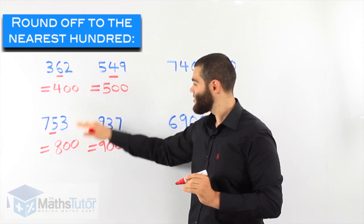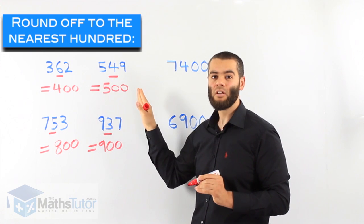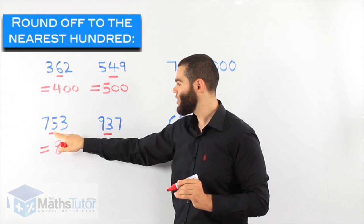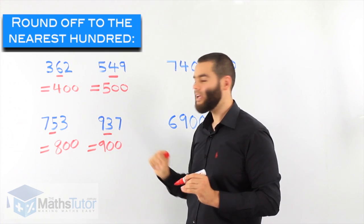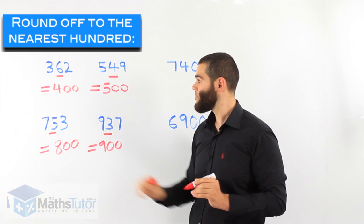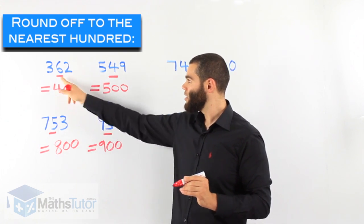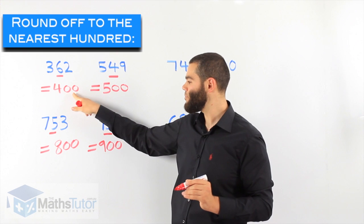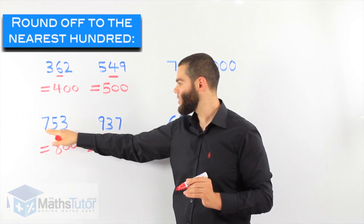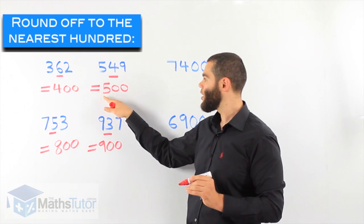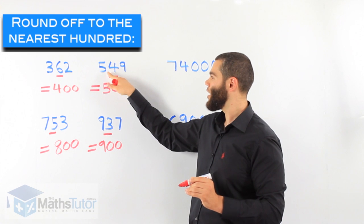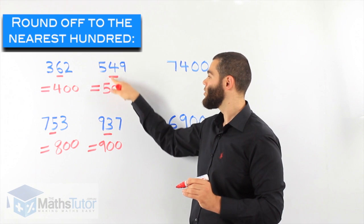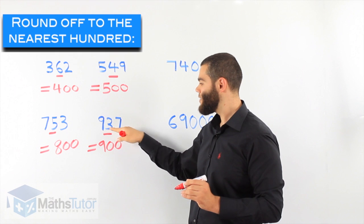So as you can see, it's a simple concept. We always look to the number on the right of what we are rounding. In the first two examples, the number on the right was five or more, so it rounded up — seven hundred and fifty-three became eight hundred. In the other cases, the number on the right of the hundreds column was less than five, so it rounded down — nine hundred and thirty-seven became nine hundred.